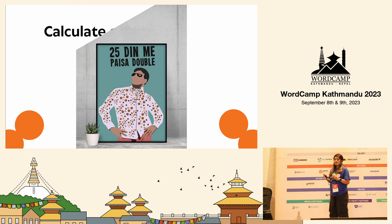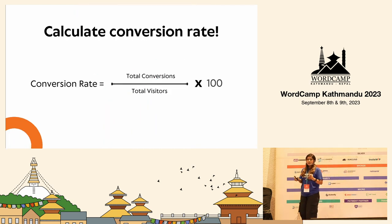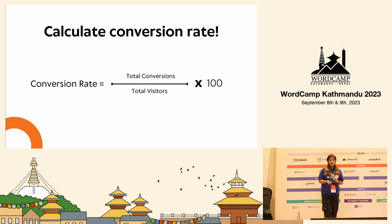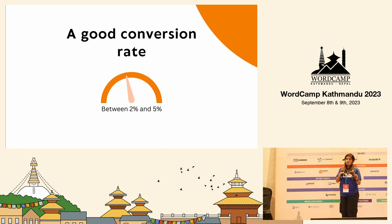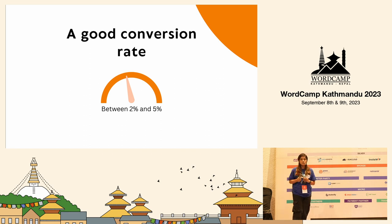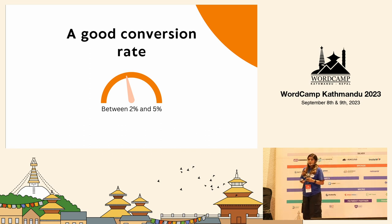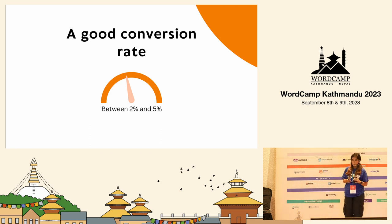Now, how can you calculate your conversion rate? It's very easy. You just need to divide the total conversions by your total visitors and multiply by 100. And what's a good conversion rate? If you are getting between 2% and 5% conversion rate for your website, you are doing very well. 3% is already considered a good amount of conversion rate, and 5% is exceptional.